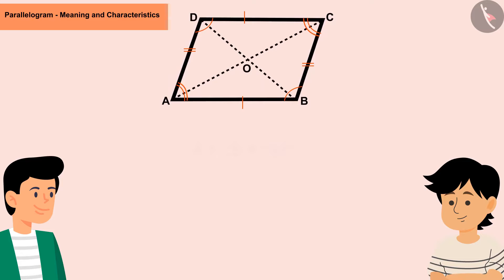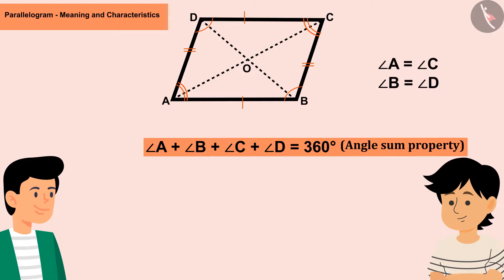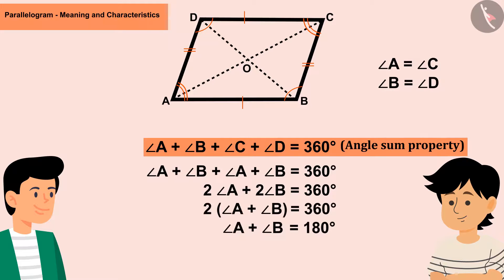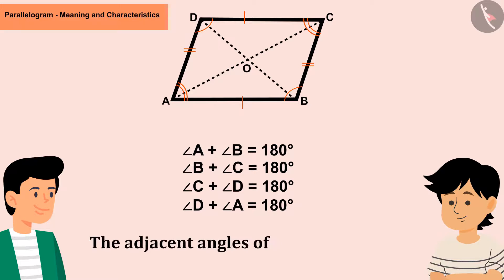The sum of all four interior angles of a parallelogram is 360 degrees by the quadrilateral angle sum property. Since opposite angles are equal, adjacent angles of the parallelogram are supplementary — their sum is 180 degrees.